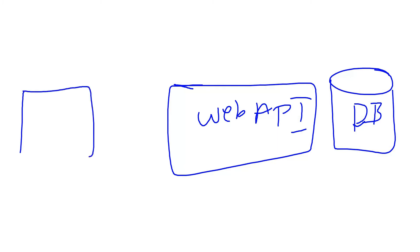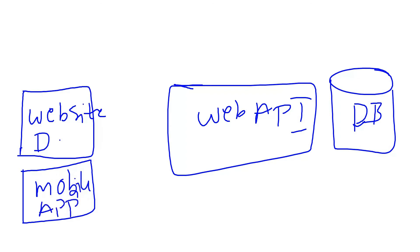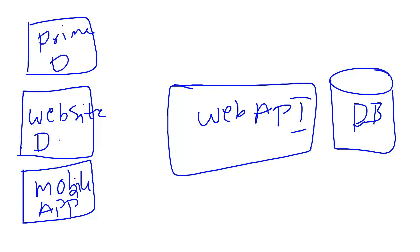Now if we want to build any number of presentation applications — here I am building a website for desktop, the Amazon website for desktop. And again, I want to build a mobile application, this one is a mobile app. I want to build another application for Amazon Prime — a prime desktop application and also a prime mobile application. Like this, I have created separate UIs.